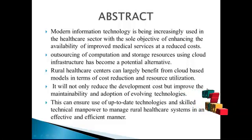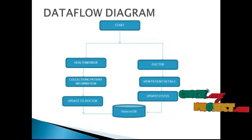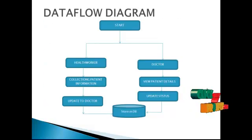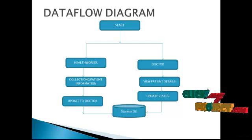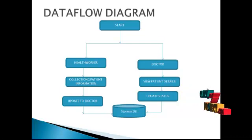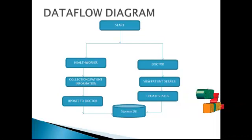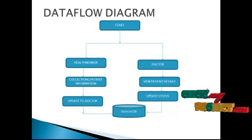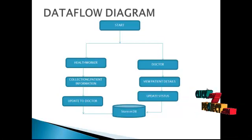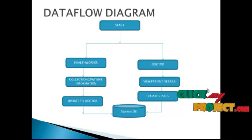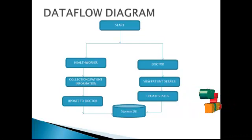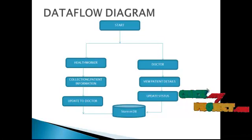Let's see the data flow diagram of this project. First, the user starts the application. Next, information is collected from the users, followed by collecting the patient information from the patient. Next, all that data is updated to the doctor and stored in the database. Finally, the doctor views the patient records, views the patient details, and updates the status. Also, the doctor prescribes medicine and other information to the patients. Finally, the user and the doctors use the same database.